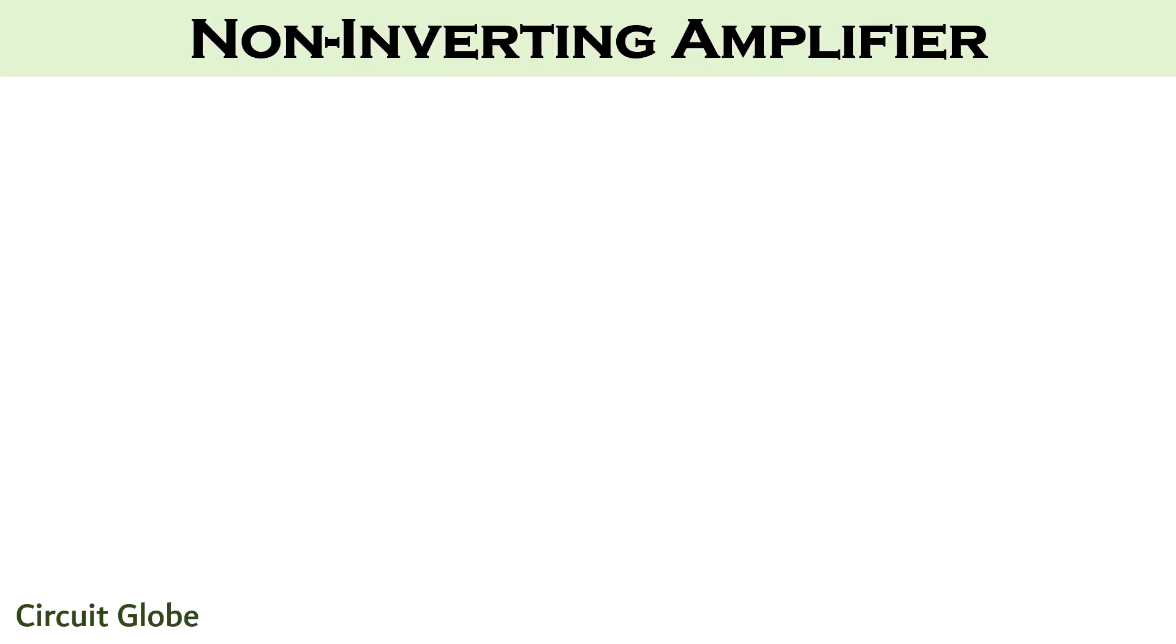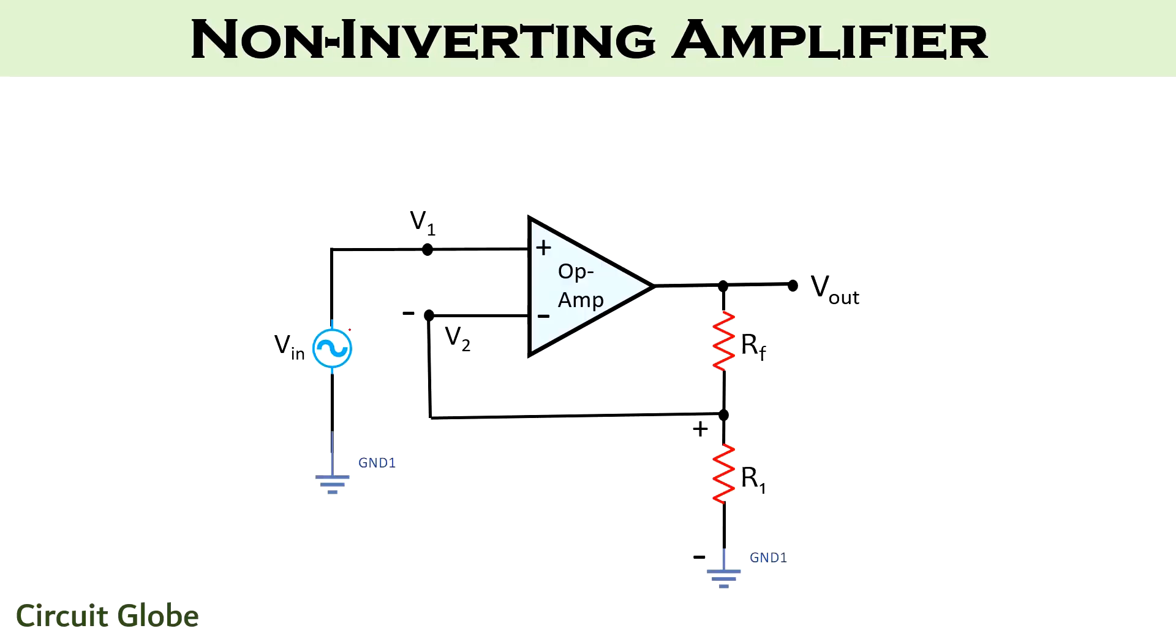Now, coming next to the non-inverting type of operational amplifier. The circuit representation clearly shows that input in this particular case is provided to the non-inverting input terminal that is the positive terminal of the operational amplifier. As here, the input is directly fed to the non-inverting terminal.